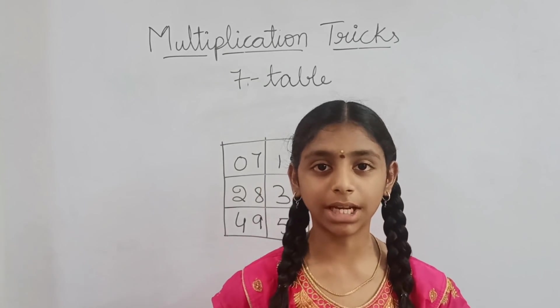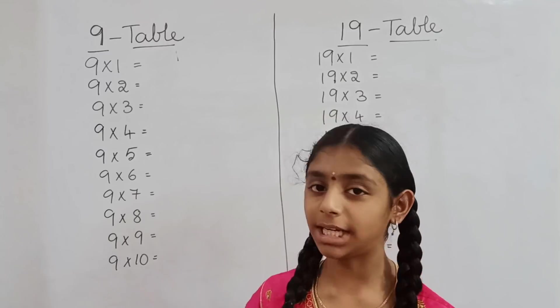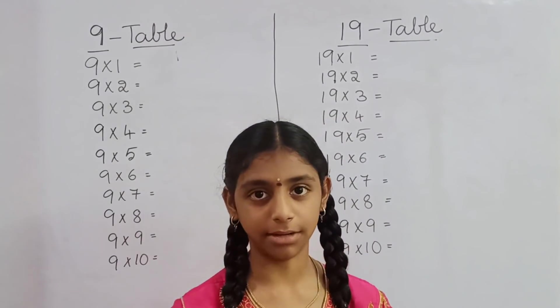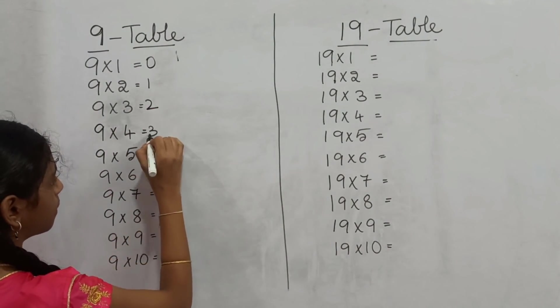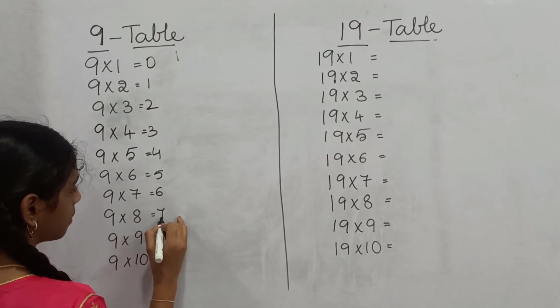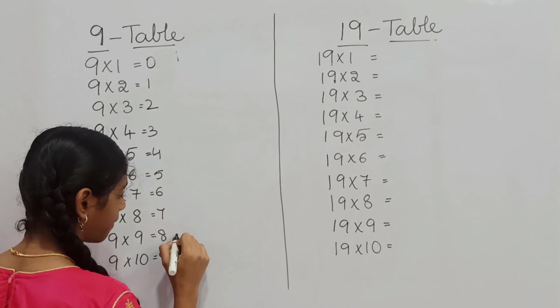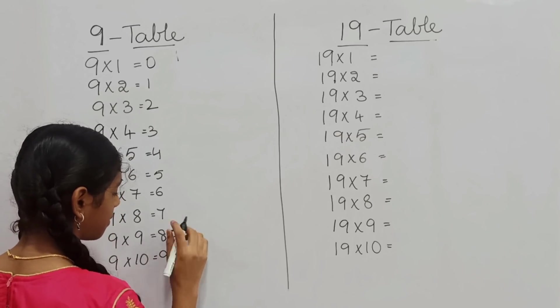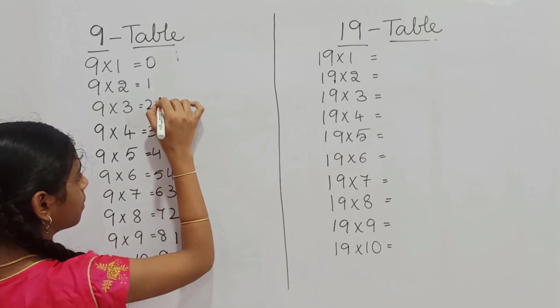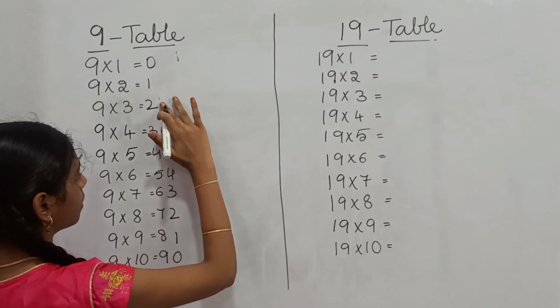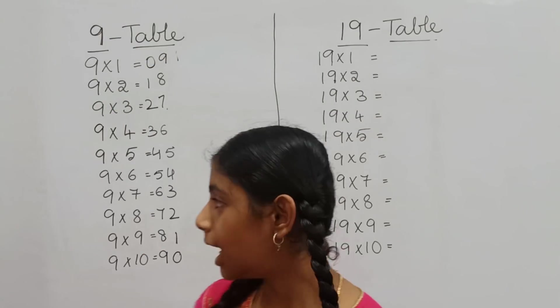Now, I want to share 9 table and 19 table for you. You may already know 9 table trick, but I want to share once again. I will write 0 to 9. From bottom to top, once again I want to write 0 to 9. Yes, our 9 table is completed.